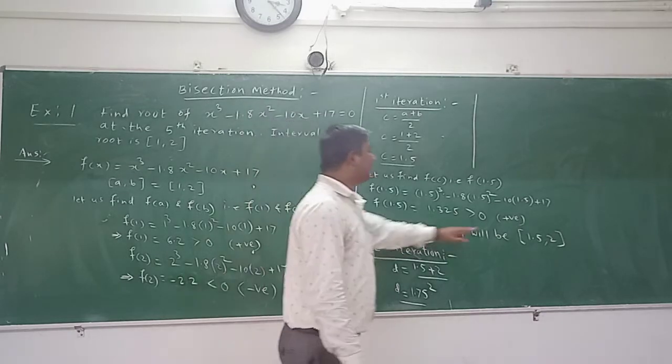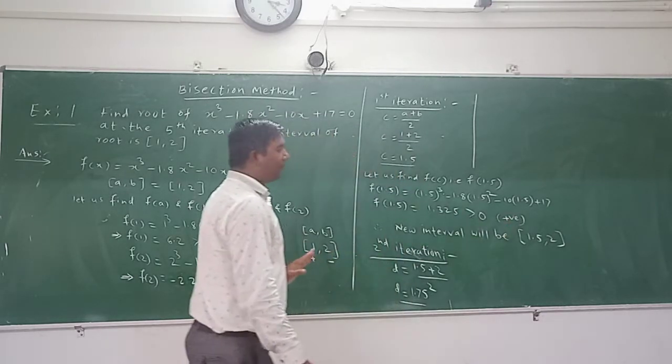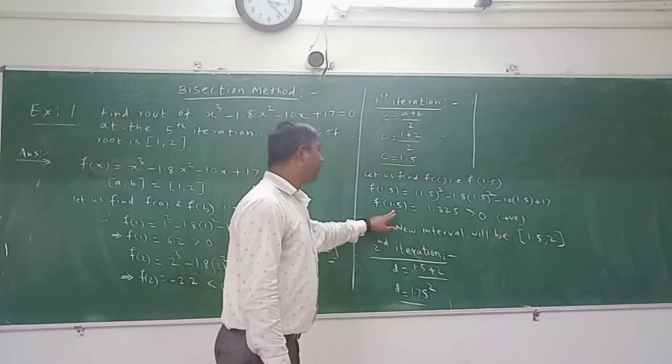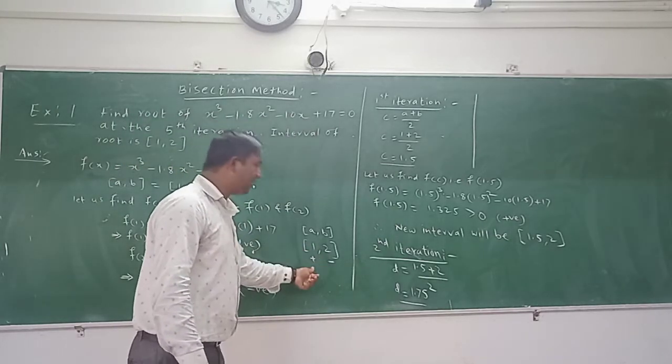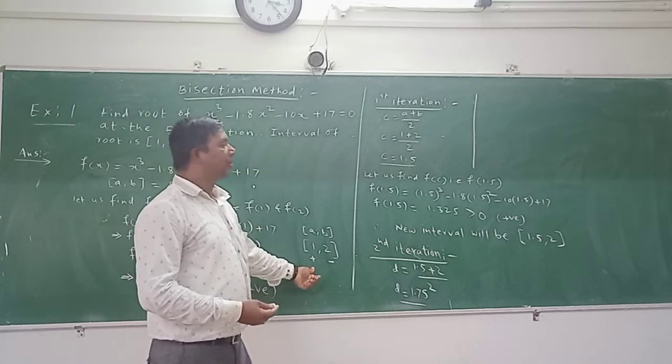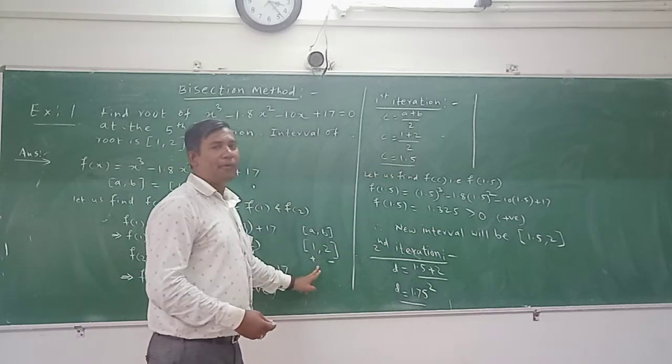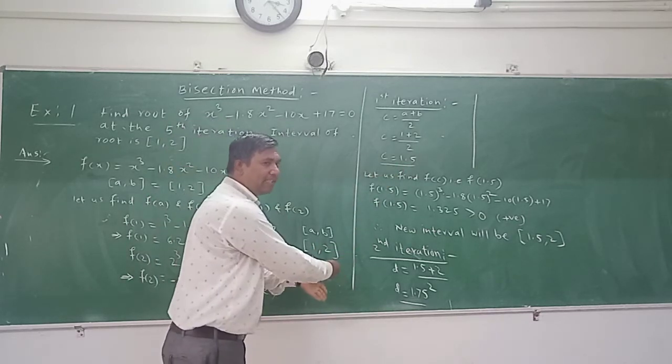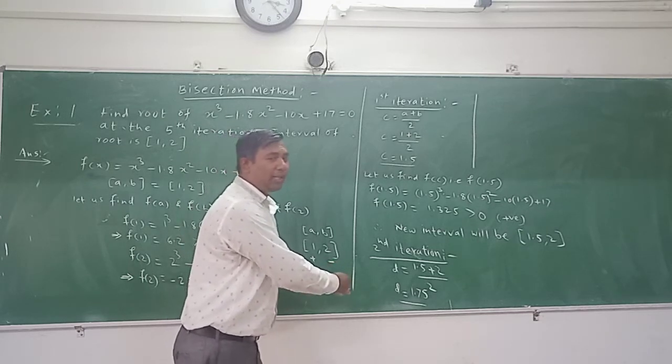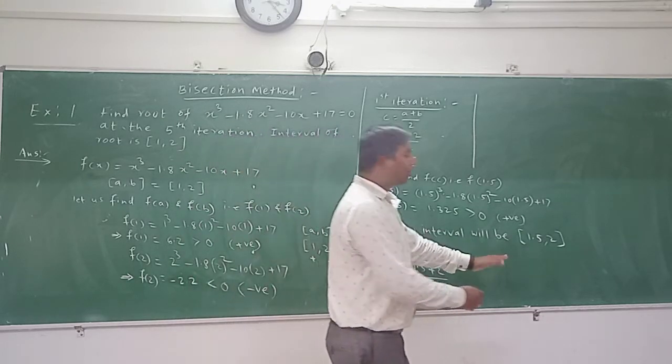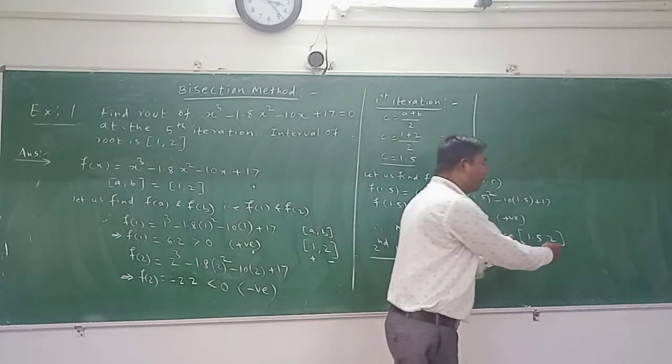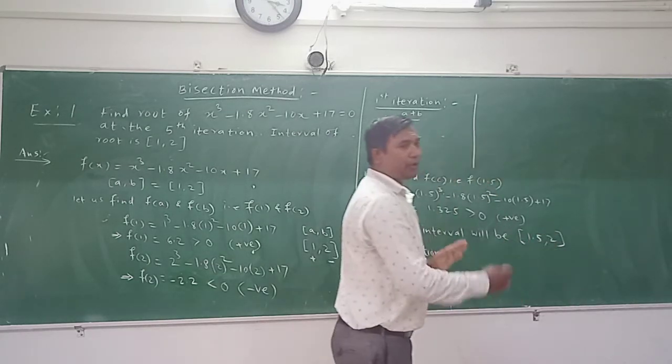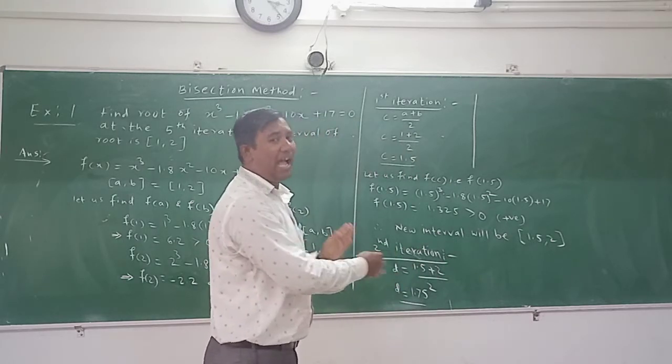So now as it is a positive outcome for f of 1.5, it will replace the previous positive value which is 1. 1 is positive, so it will replace 1. So 1.5 will replace 1. So your interval is now shorter from 1 to 2, it is now 1.5 to 2. So you have shortened the interval by half.